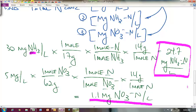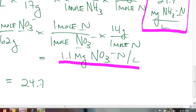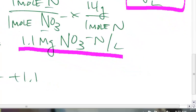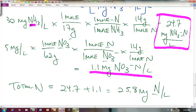So if we wanted to calculate the total amount of nitrogen that's in this system, since this is written as nitrogen, this one's written as nitrogen, we can add these up together. And so to do that, total nitrogen would be equal to 24.7 plus 1.1 would equal 25.8 milligrams of nitrogen per liter. Everything's written as nitrogen. And that would be our final answer there.